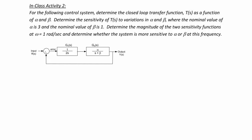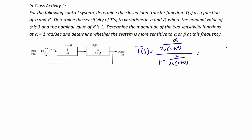The first thing we're going to do is derive the closed loop transfer function. T(S) is equal to alpha over 2S times (S plus beta), divided by 1 plus alpha over 2S times (S plus beta). This simplifies to alpha over 2S squared plus 2 beta S plus alpha.